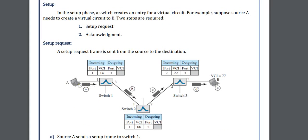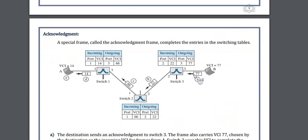In this switch, first the sender is sending on port A and the VCI port is 14. The outgoing port is 3. When it reaches switch 2 it has port 1 and the VCI address is 66, so the outgoing port is known. After it transforms the outgoing port 2 to incoming port 2, the VCI address is 22. Then it knows the outgoing address is 22, and after that it sends the data to port 3 where the VCI address is 77. That is how it knows the outgoing port VCI address is 77, and that is how we generate this table.